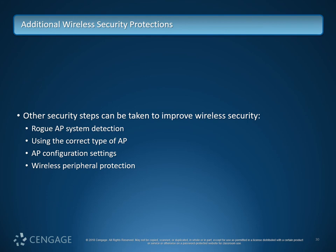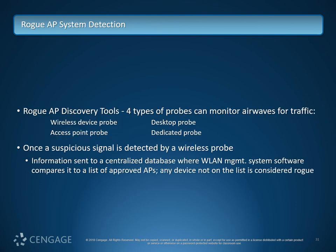Other steps that can be taken include rogue AP system detection — when challenge tokens are employed, using the correct type of AP, making sure it's configured correctly, and wireless peripheral protection. For rogue AP discovery, there are four types of probes to monitor the airwaves: wireless device probe, AP probe, desktop probe, and dedicated probes. Once a suspicious signal is detected, information is sent to a centralized database where the WLAN management software compares it to an approved list; any device not on the list is considered rogue and flagged.